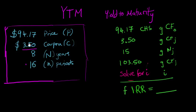So the price of the bond, the current market price is $94.17. The coupon is $3.50, that's semi-annual, so it's a 7% nominal rate, which is a 3.5% nominal semi-annual rate. The semi-annual periods are 16 and the annual periods are 8.